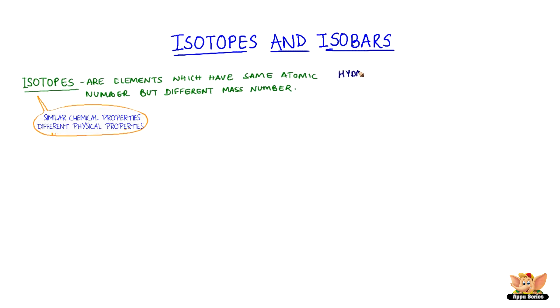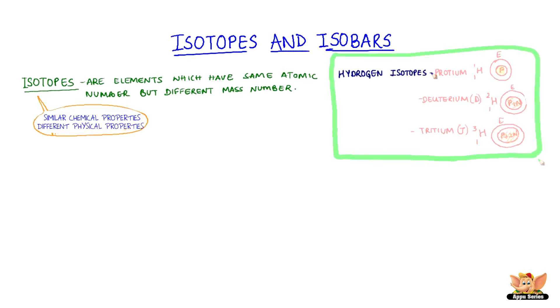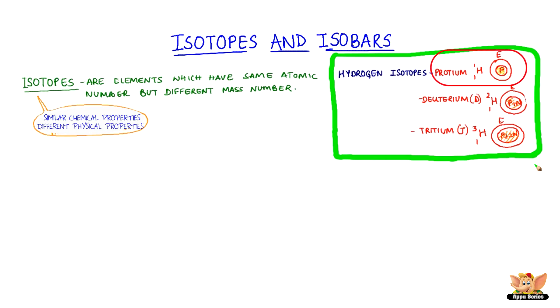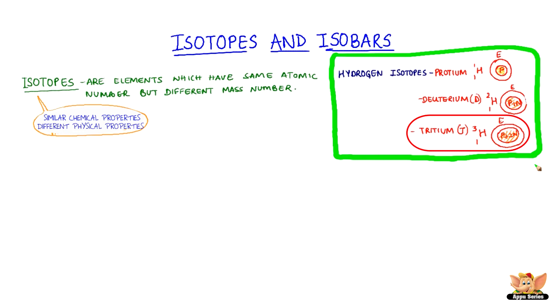Hydrogen has three isotopes: protium, deuterium, and tritium. Protium has one proton and one electron. Deuterium has one proton, one neutron, and one electron. And tritium has one proton, two neutrons, and one electron.